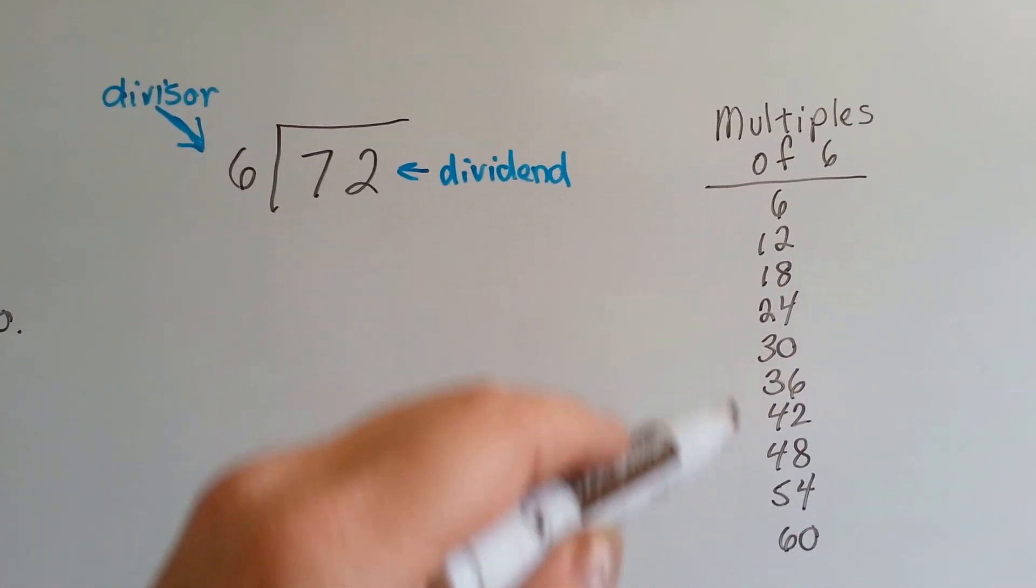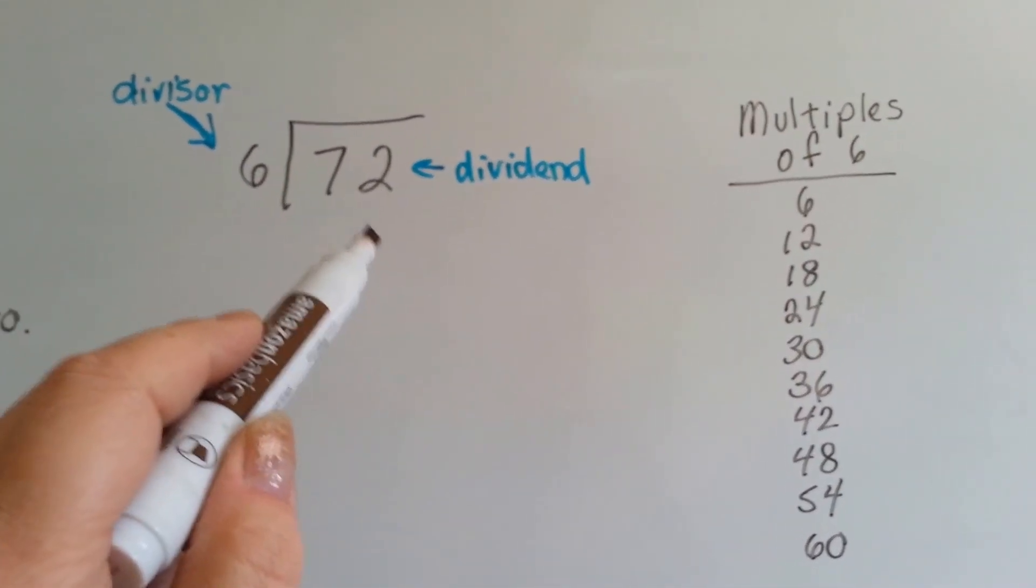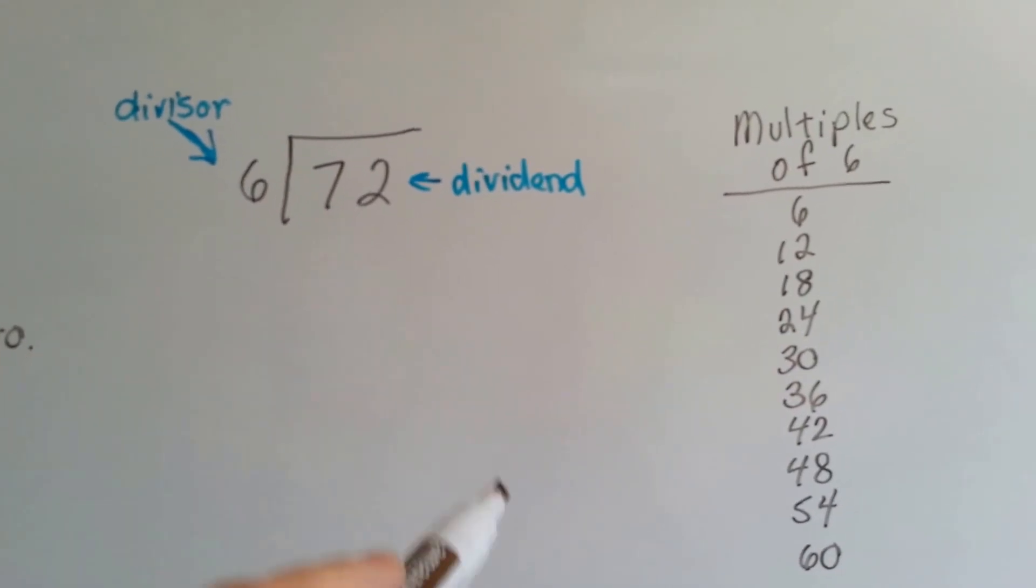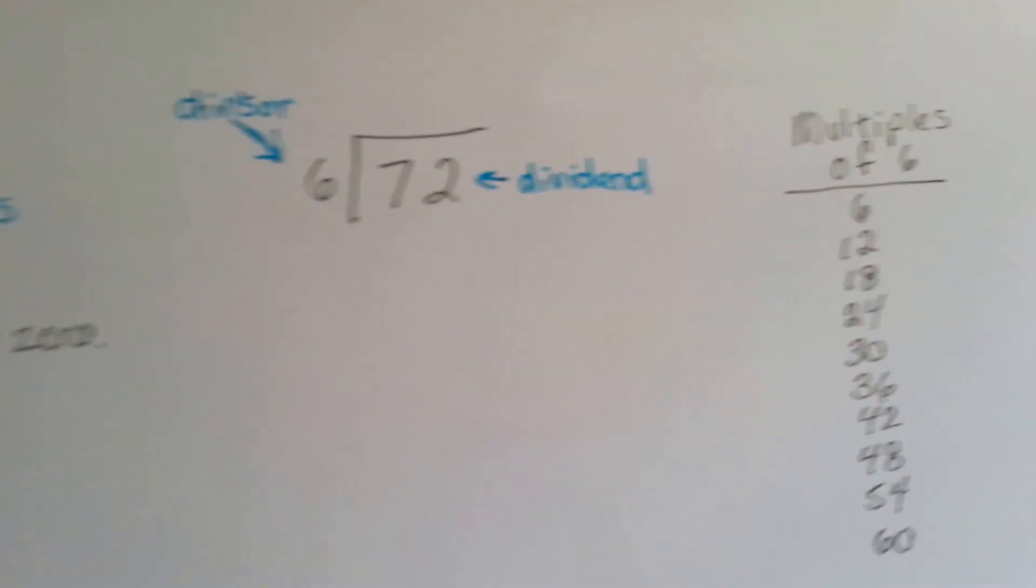So, these are the multiples of 6. We would just subtract them from the dividend until we got to zero. All right, so let's see how this works.